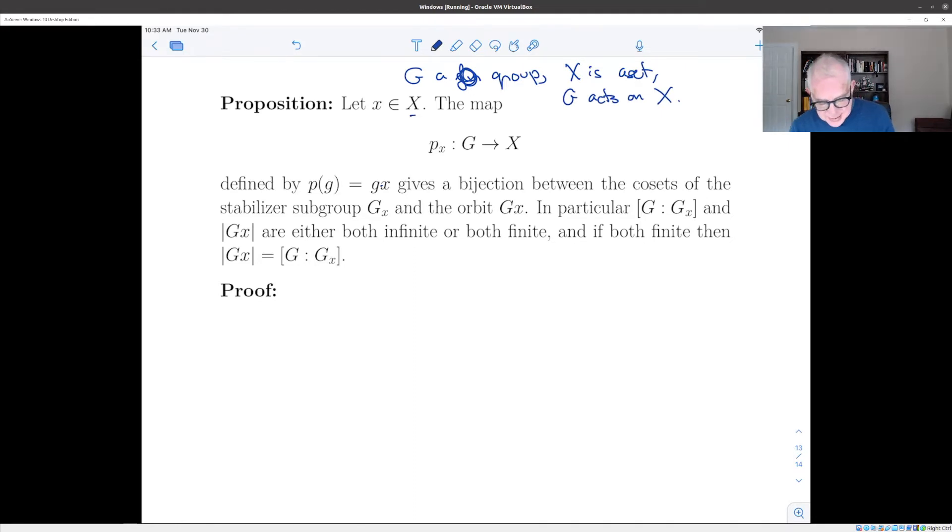And the proposition says that this gives a bijection between the cosets of the stabilizer subgroup G_x and the orbit Gx. And in particular, of course, if either of these indices or size of the orbits are finite, then they have the same number of elements. Because if you have a bijective map between two sets which are finite, then they have the same number of elements. And if they're infinite, then one of them is infinite, then they're both infinite.